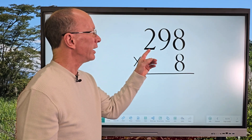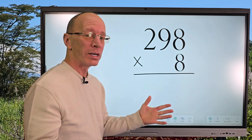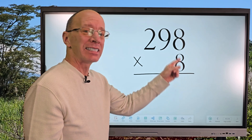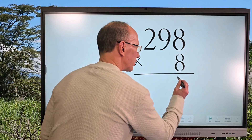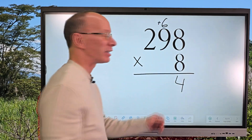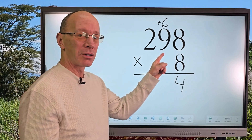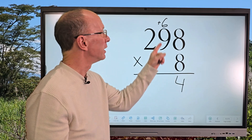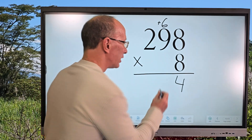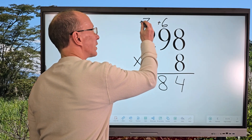Here we have two hundred ninety-eight times eight. How do you start it? We're gonna take eight times eight equals sixty-four, so I put the four right here and carry the six — we'll add that in a little bit. Now eight times nine equals seventy-two, and seventy-two plus six would be seventy-eight, so I put the eight right here and the seven up here.